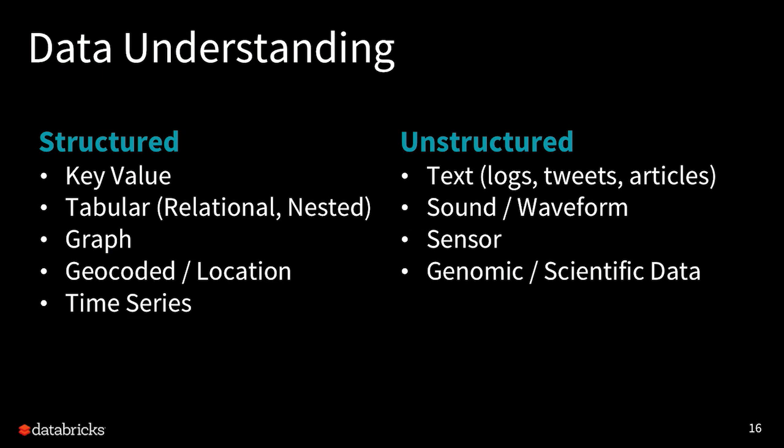The first part of the data science lifecycle is understanding your data sets. You could have data structured in key-value type storage, tabular like relational databases, graph, geocoded location data, time series data — all different kinds of structured data sets. There's also unstructured data — things like text, sound and waveform data, sensor data, genomic data or scientific data. These are all different kinds of data required to create your models.